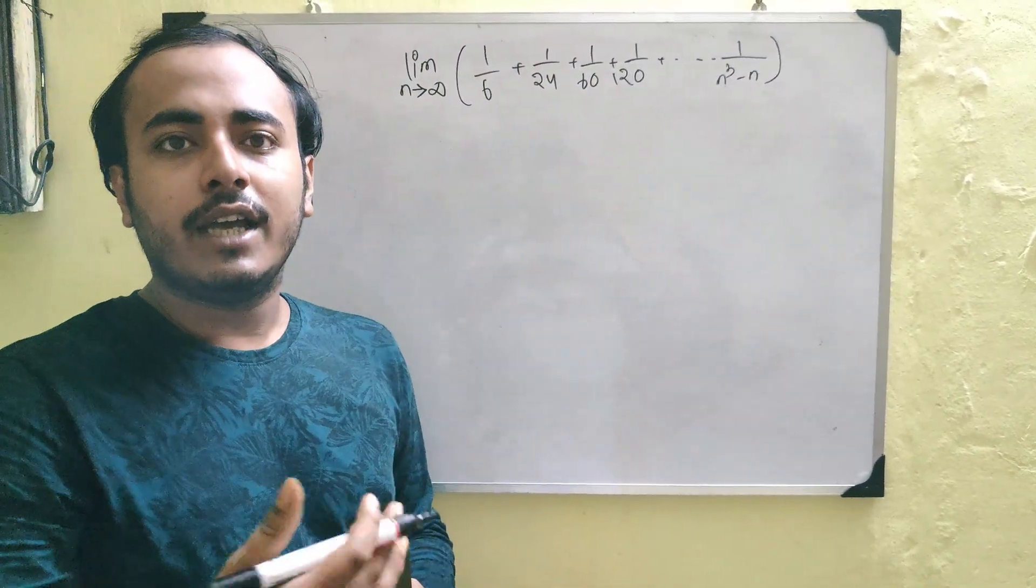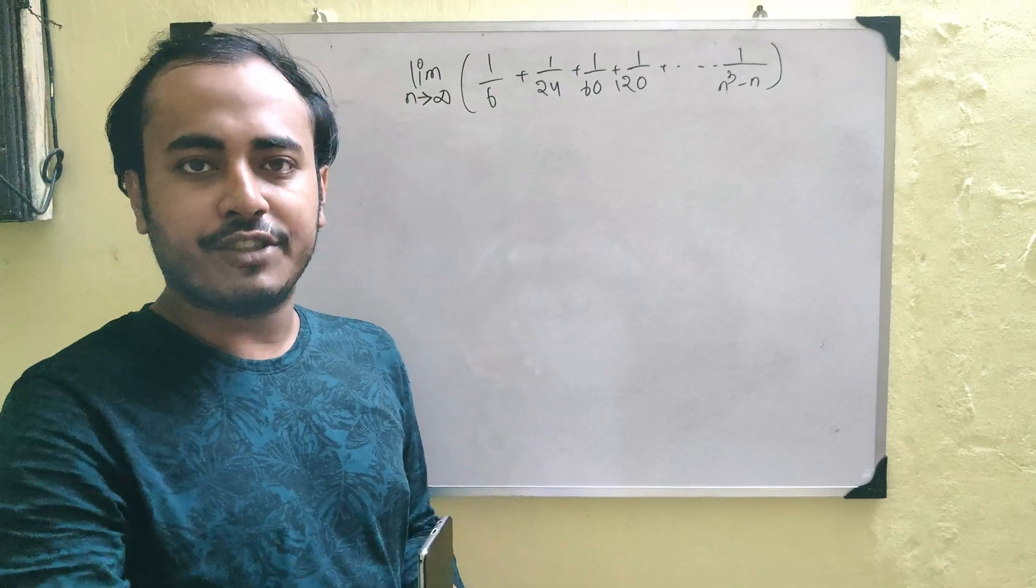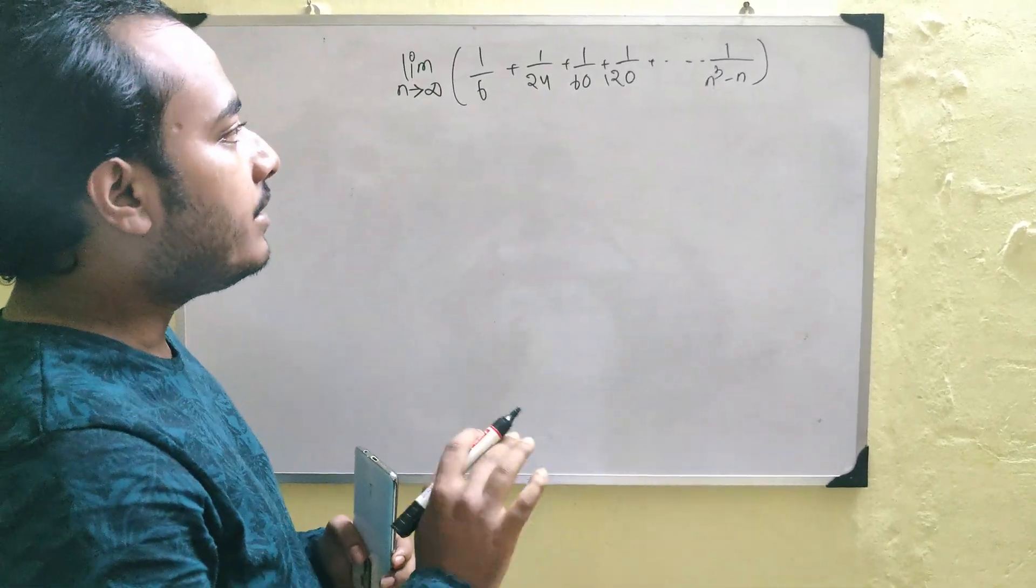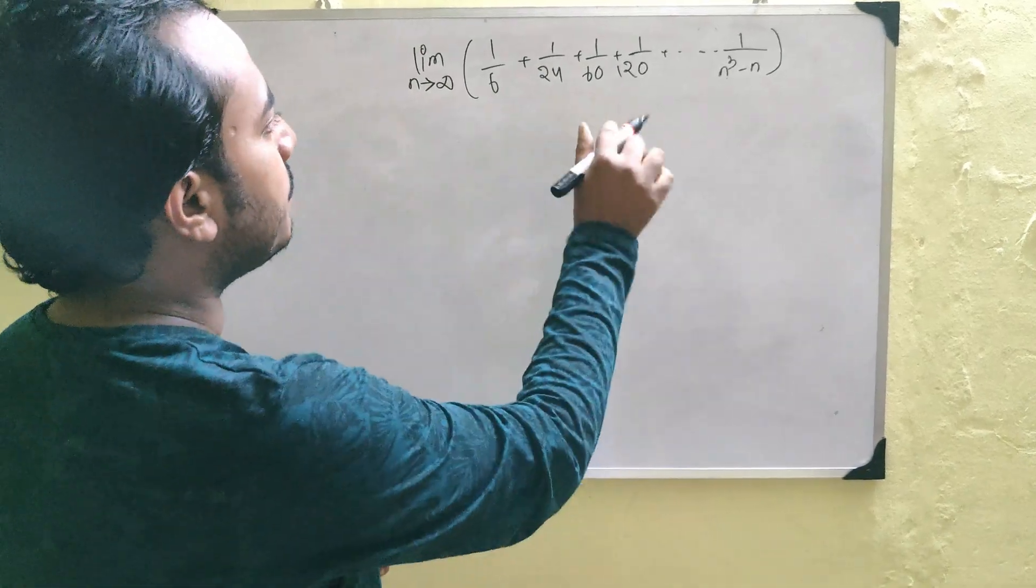what you assume is these are going to be Riemann sums. Like, somehow you are going to transform it into a Riemann sum of the form 1 by n, summation k equals to 1 to infinity and stuff and then do an integration. This is not always the case and that is why this one is important.